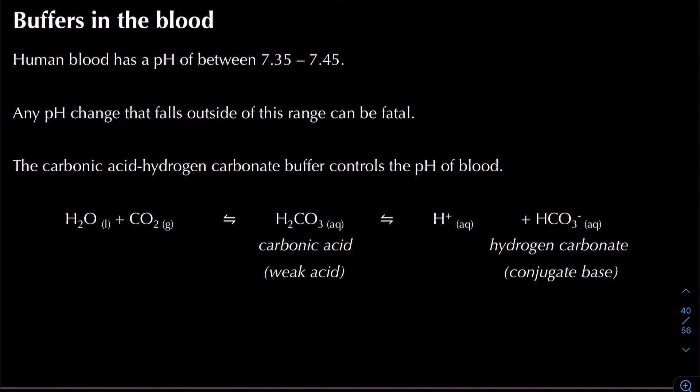In this video we're going to be looking at buffers in the blood. Human blood has a pH between 7.35 and 7.45, and any pH change that falls outside that range can actually be fatal for the human body.